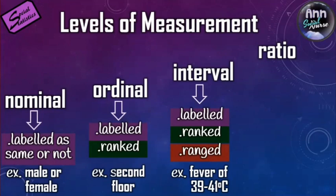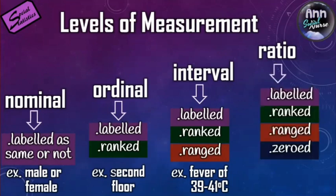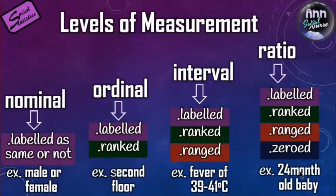Similarly, a score range of 1 to 10 includes all numbers in between — 2 through 9 are all present and important. Ratio has the characteristics of nominal, ordinal, and interval, plus its own: a true zero value. For example, a 24-month-old baby — age starts at zero. Before one year old, an infant is considered at age zero. Other ratio examples include weight and height, which also start at zero.